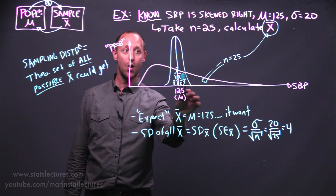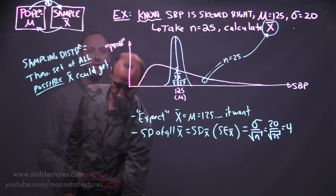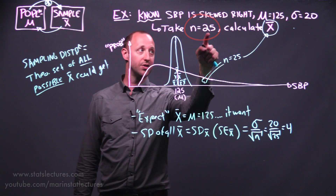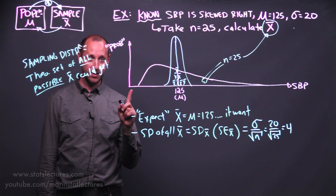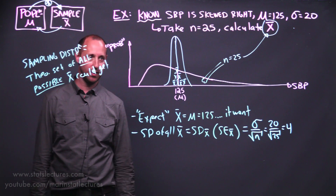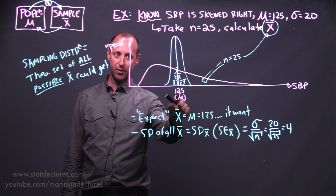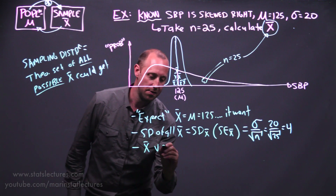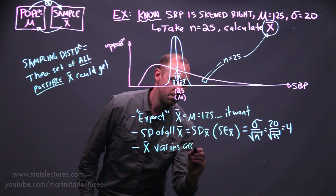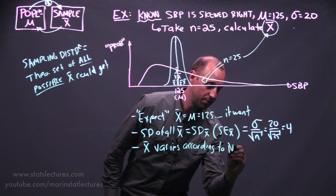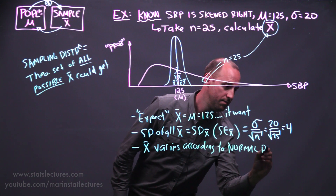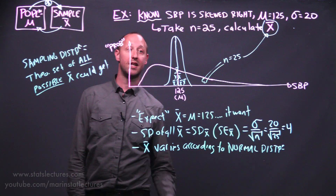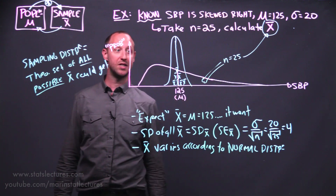We also know that the sample mean is going to be normally distributed — symmetrically distributed — around the true mean. To recap: we reach into the population, select 25 individuals, and calculate a sample mean. We only do this once, but we think of it as one of many estimates we could have possibly got. We expect our estimate to equal the true value, knowing it won't — it might vary a bit above or below. The sample mean varies according to a normal distribution, meaning it's normally distributed around the true value. The standard error gives us an idea of, on average, how far our estimate will move from the true value mu.